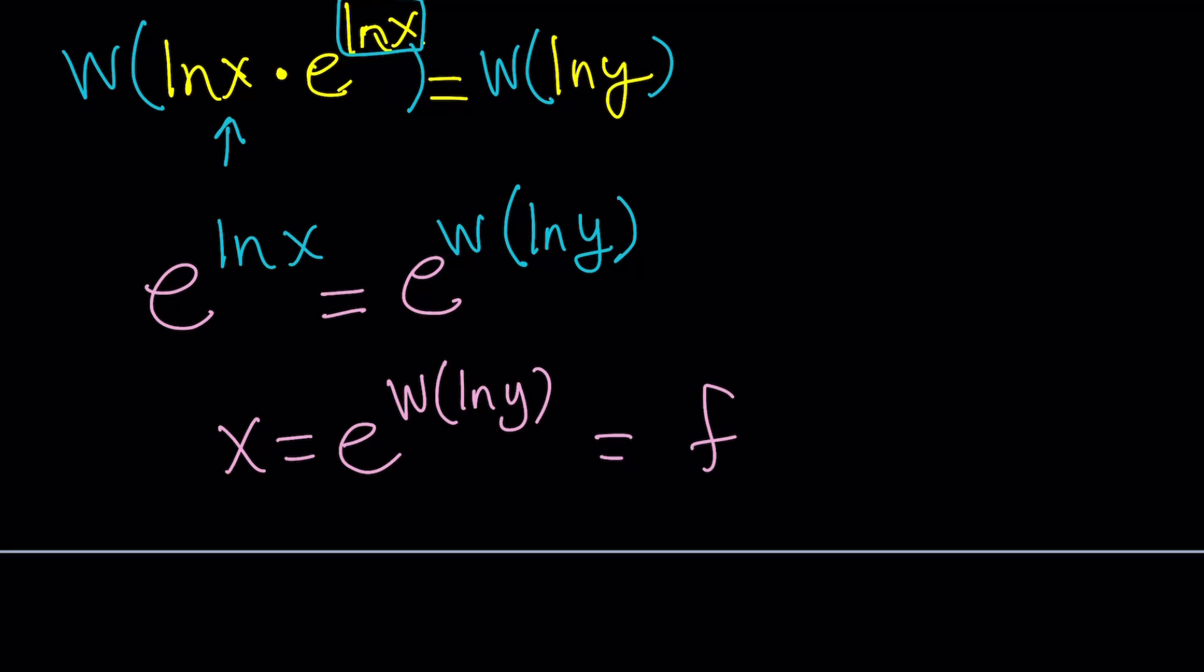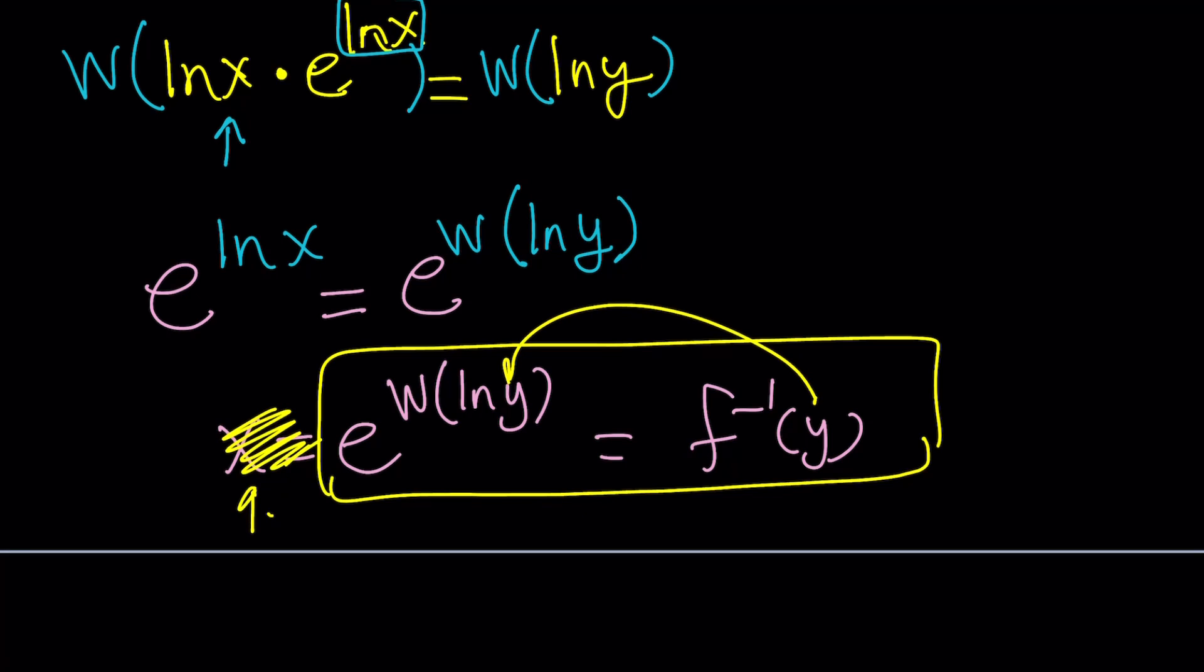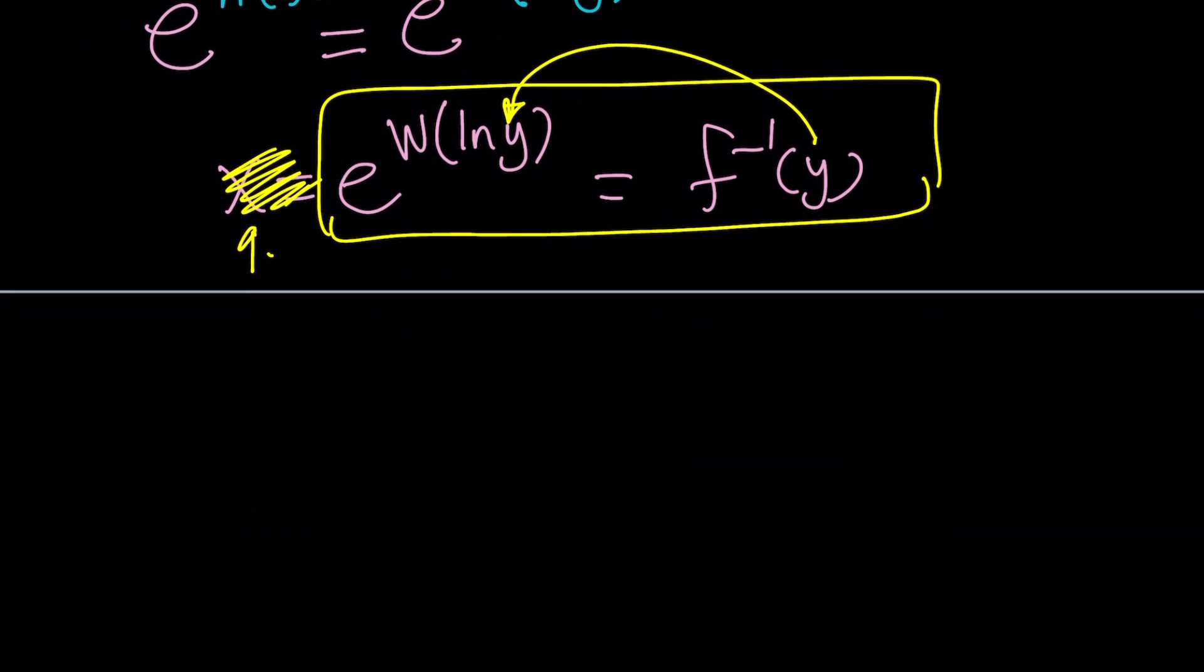But guess what? This is f inverse of y. Notice that this is a function of y. But we want to write the inverse function in terms of x. So all you have to do is forget about this x. Ignore it. You don't need that anymore. And just replace y with x on both sides. That's going to give you f inverse of x equals e to the power W of ln x. So if you're trying to invert this function, then you can go ahead and use this formula.